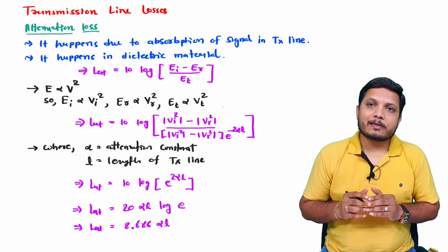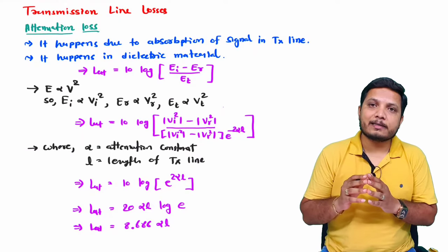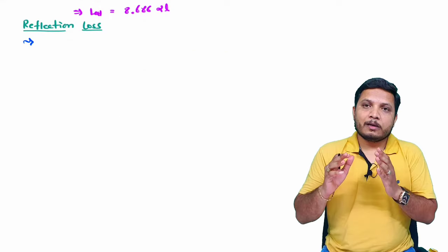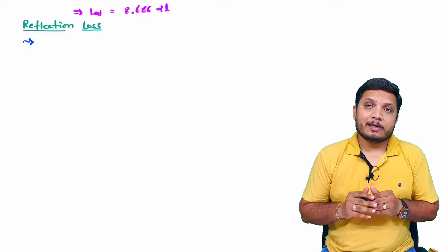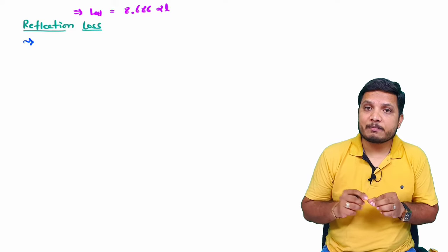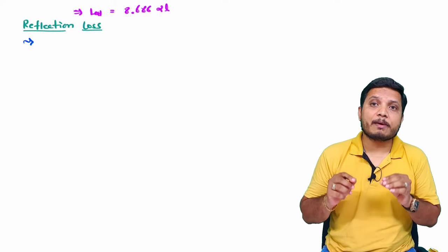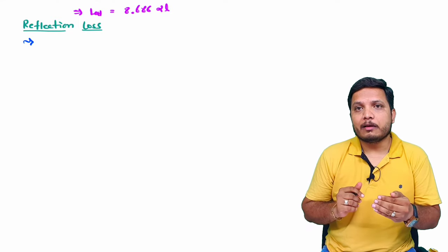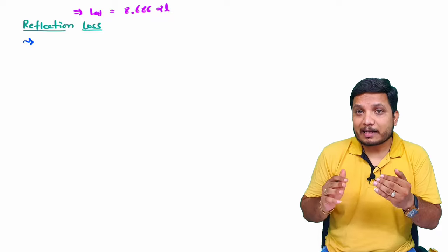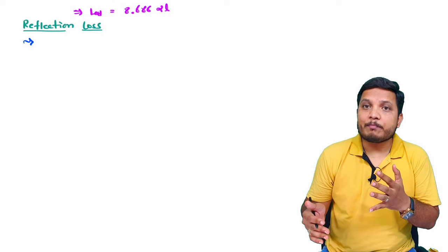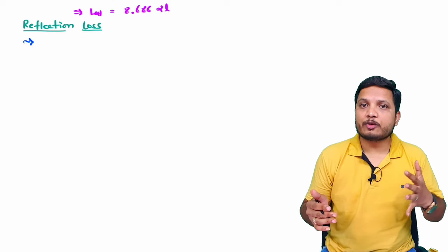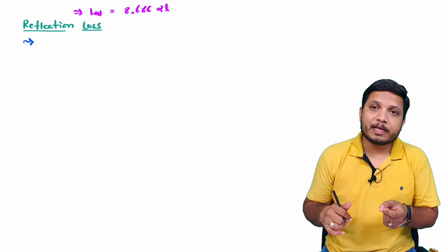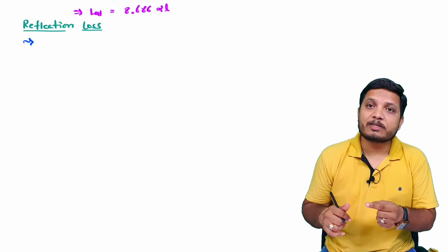The next loss to discuss is reflection loss. This reflection loss is present in a transmission line due to mismatch of the transmission line. Whenever you have a transmission line which does not have impedance matching with the source, there will be reflection. So it happens due to mismatch of the transmission line.